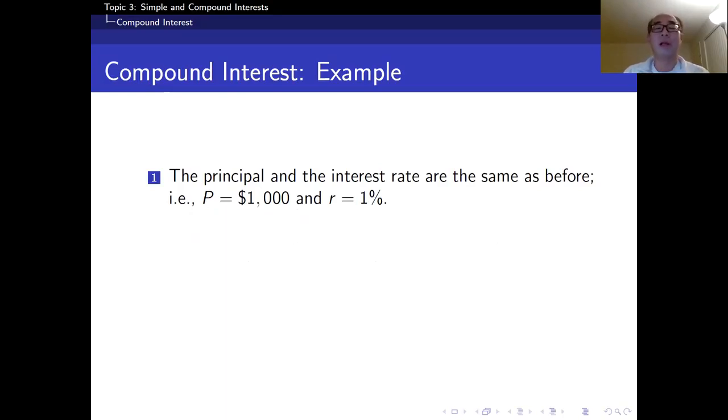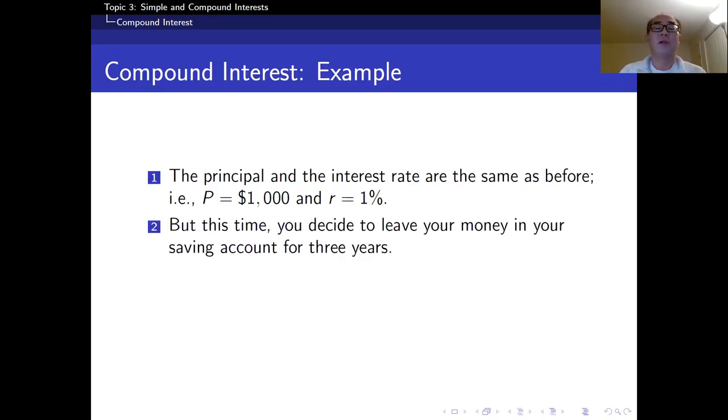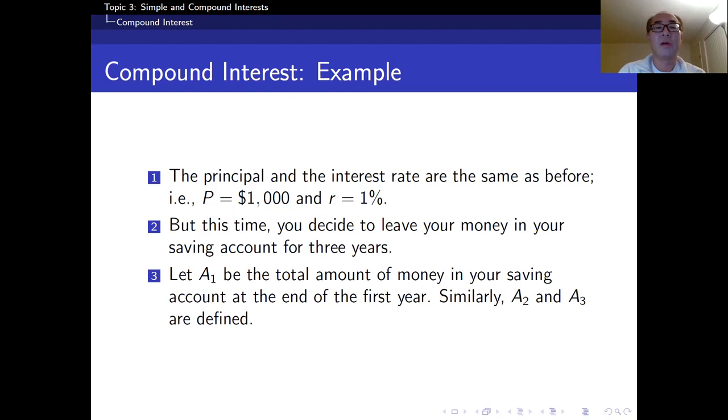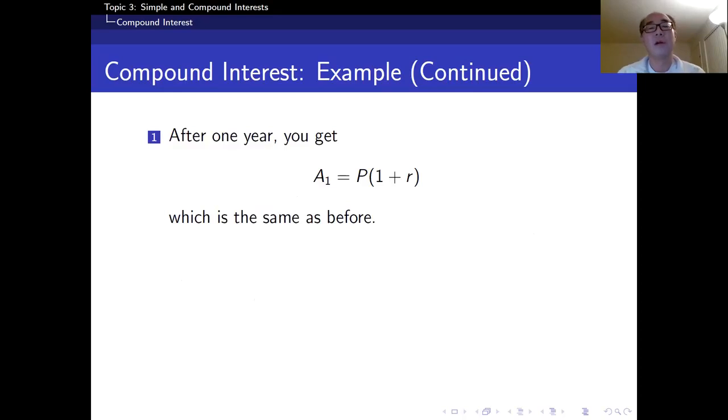As before, let's say the principal is $1,000 and the annual interest rate is 1%. This time, you're going to leave your money in your saving account for three years. Here's the notation: A₁ or A sub 1, because 1 is in small letters, is the total amount at the end of the first year. A sub 2 or A₂ is the amount after two years, and A sub 3 or A₃ is the amount at the end of the third year. Here's the formula. After one year, we know this already: A sub 1 equals P times (1 + r). That is the same as before.